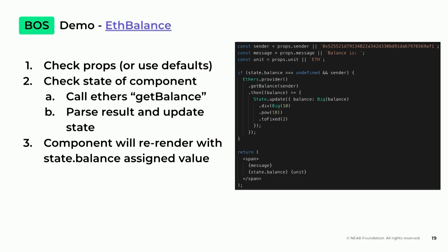Let's look at one specific component — the ETH balance component. What this component does is something very simple. It reads a provider — ethers.js is included out of the box, so you can use the get provider function from ethers.js to detect an injected provider like MetaMask. You can then get the account of the user, query the blockchain using the get balance function from ethers, and then render this balance. Pretty familiar to anyone who has worked with ethers.js or even Web3.js. And similar to React, when you trigger some kind of update to state or props, it's going to re-render the component — a pretty familiar React lifecycle for your front end.